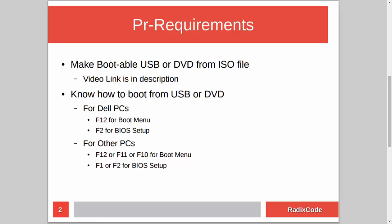After making a bootable USB, you should know how to boot your computer from a USB stick. For Dell laptops, press F12 to go to the boot menu and select the USB drive. You can also go to BIOS setup by pressing F2 and in the boot section change the boot order to boot from USB. On other computers, press Escape, F12, F11, or maybe F8. For BIOS setup you can press either F1 or F2.